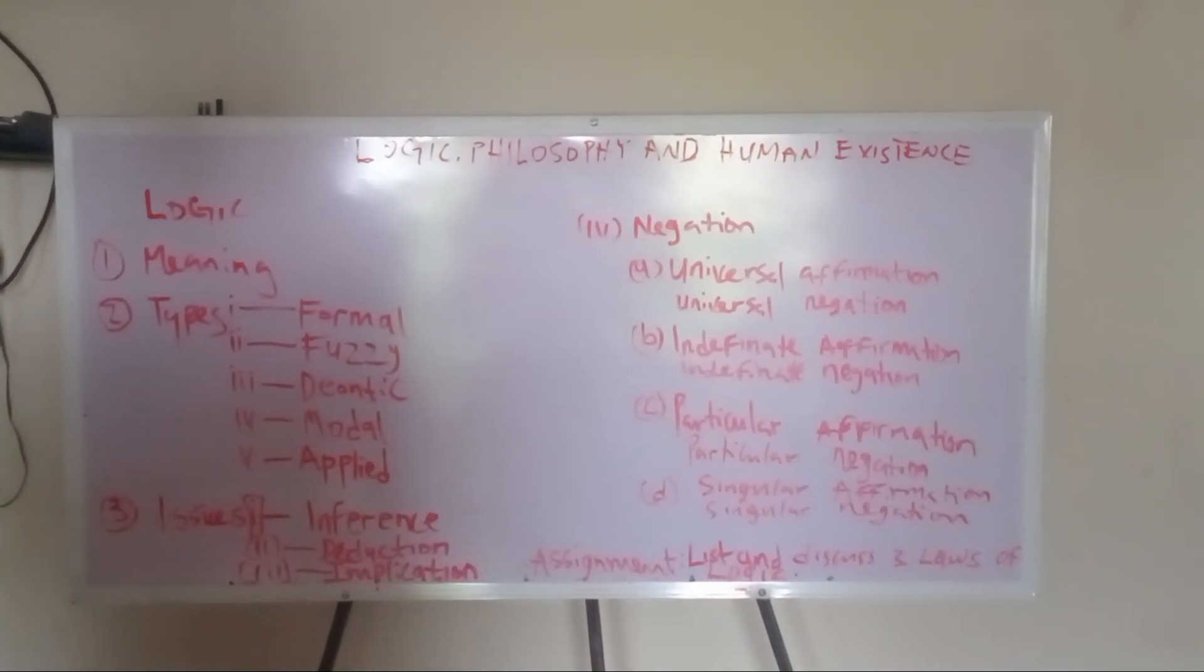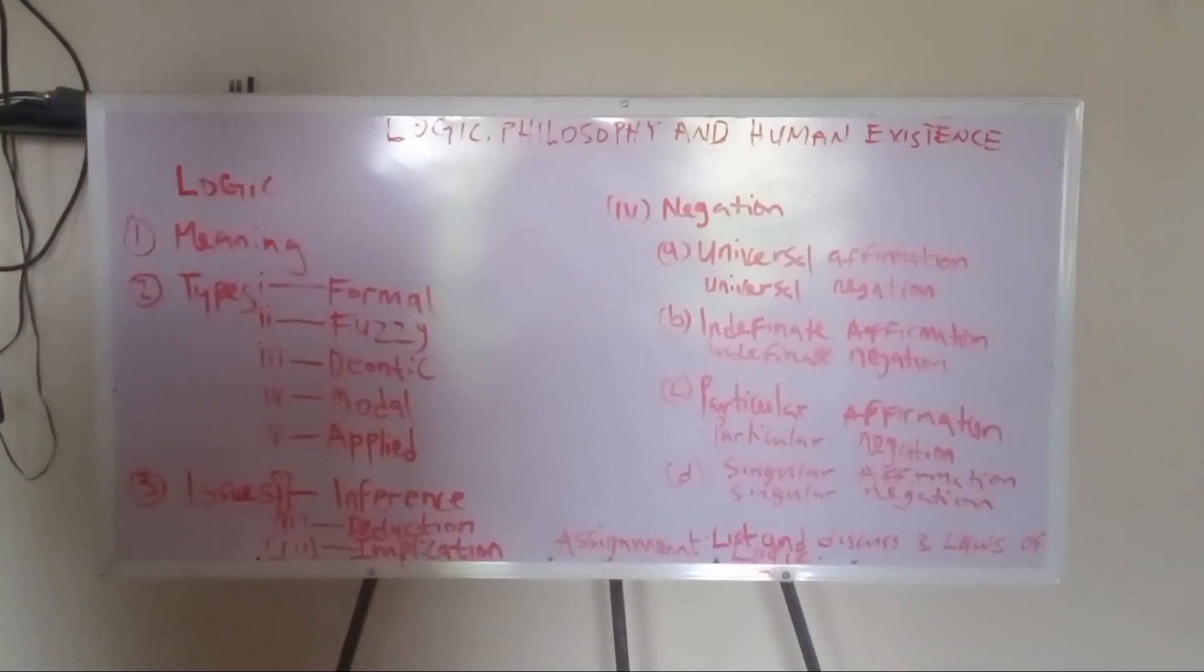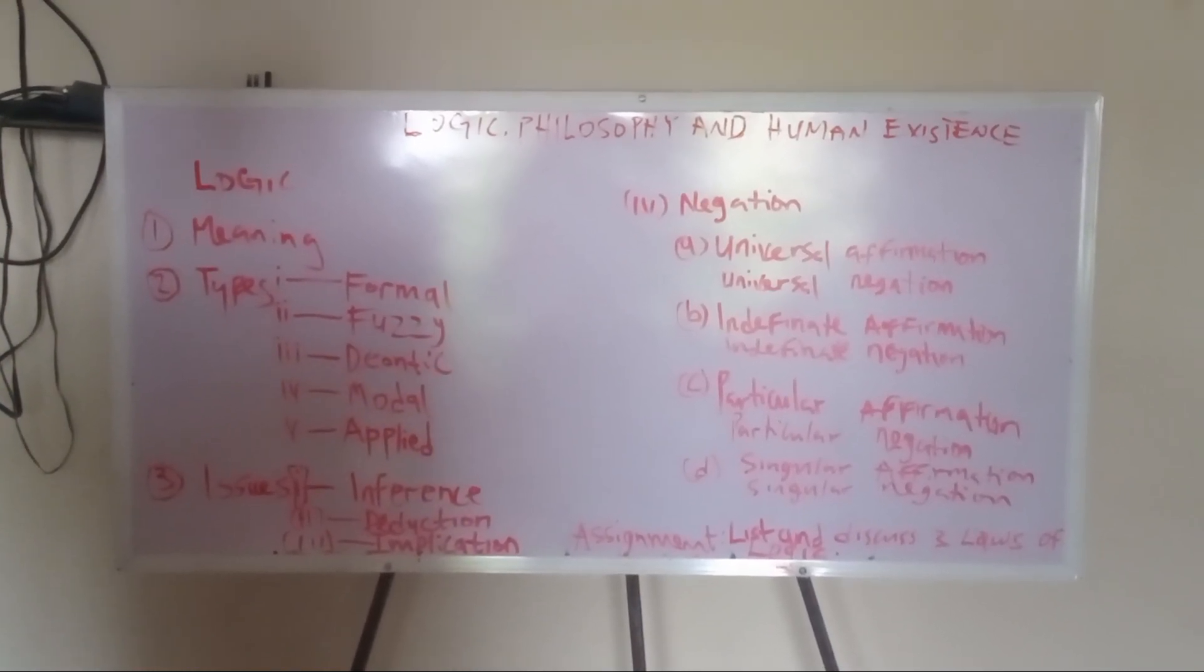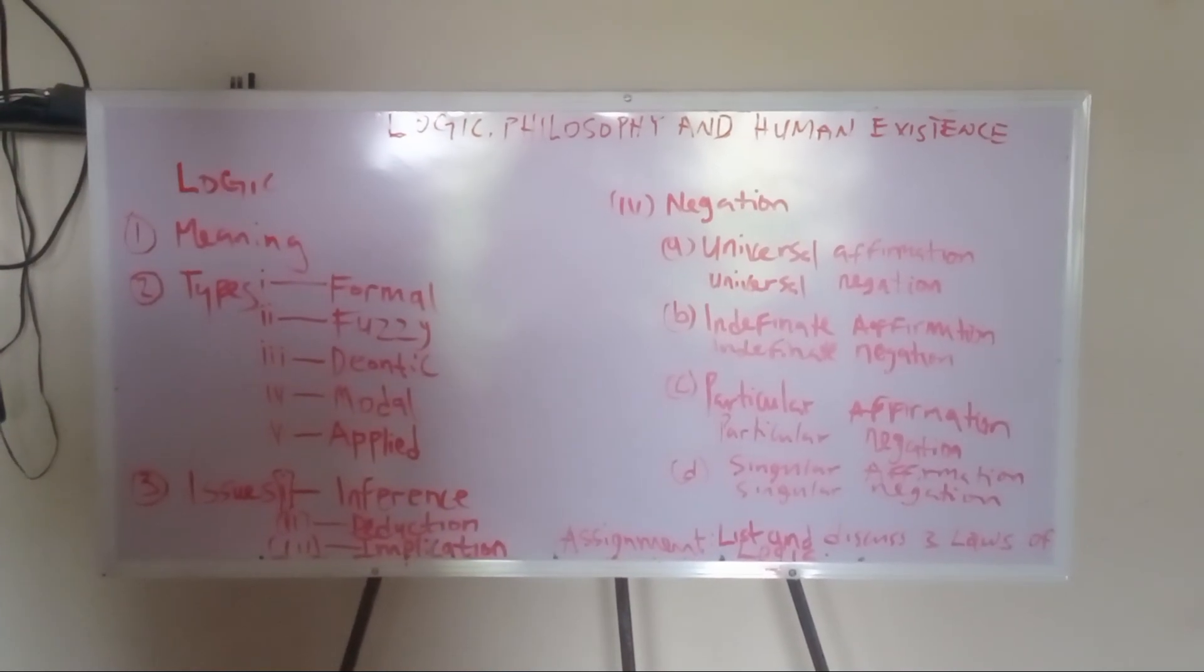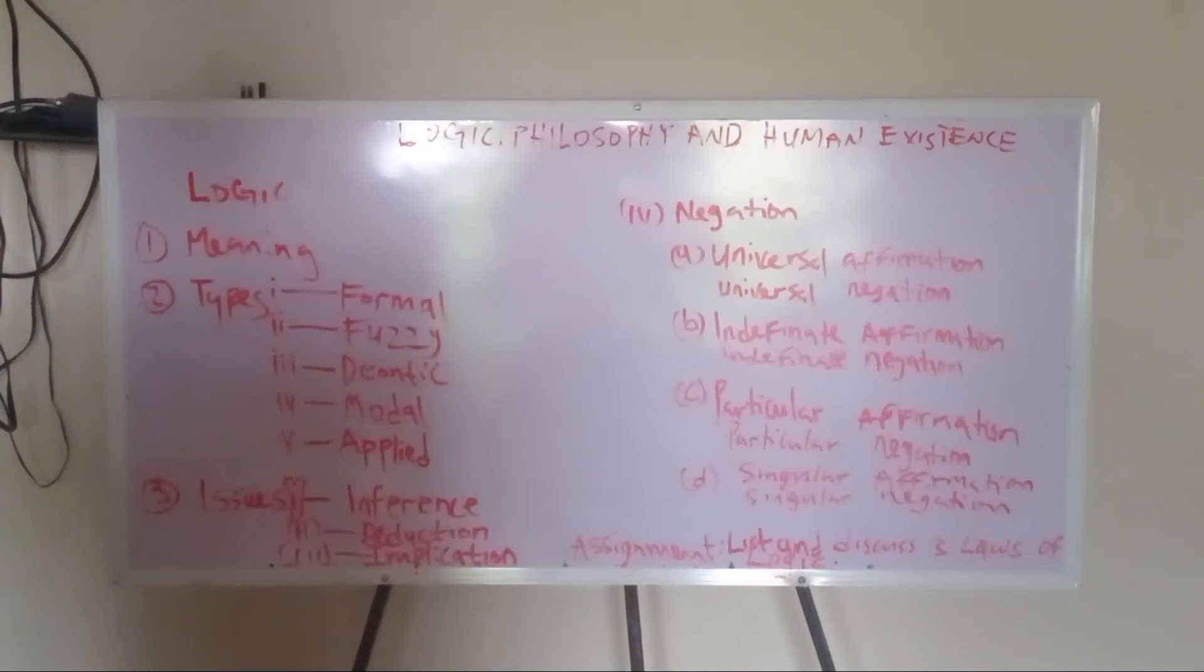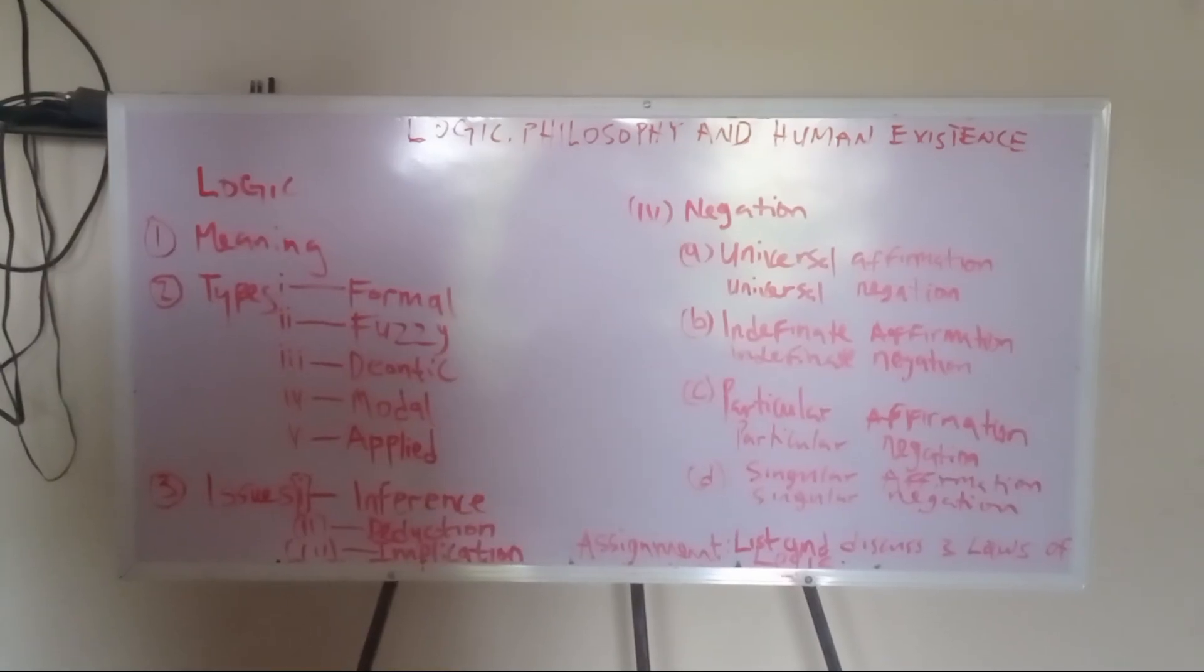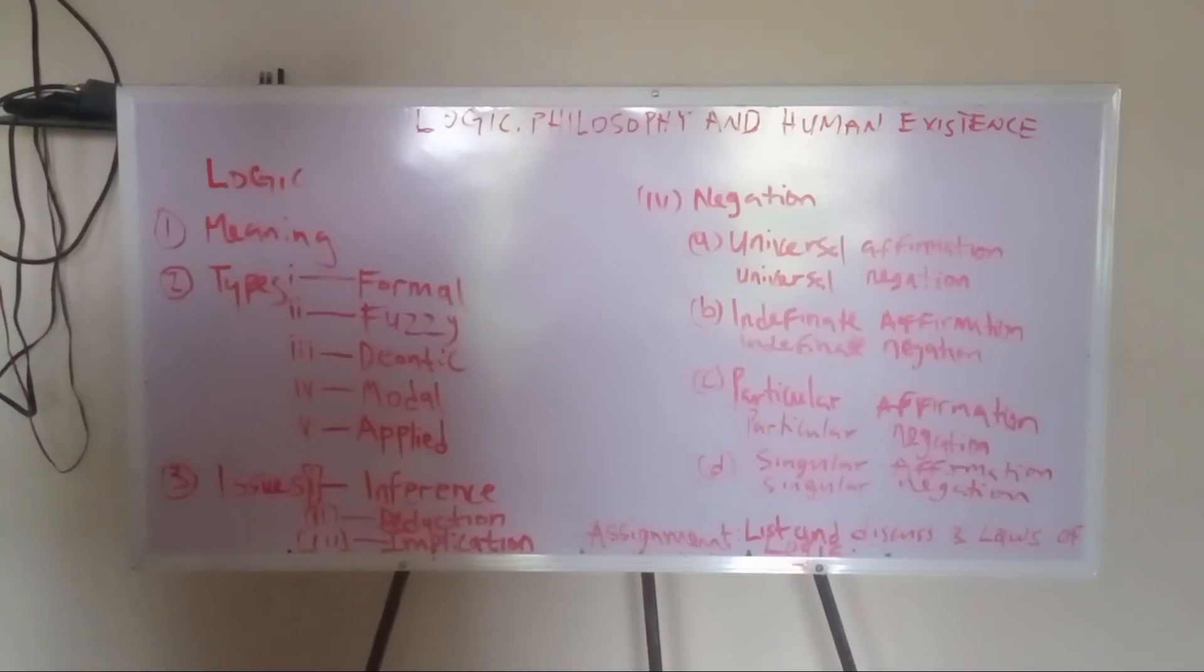Before we move to the types of logic, I will quickly remind us that logic has a Greek connotation, which means logos. Don't forget, that's a Greek connotation. Moving forward to the types of logic, we have five basic types of logic. The first is formal logic.